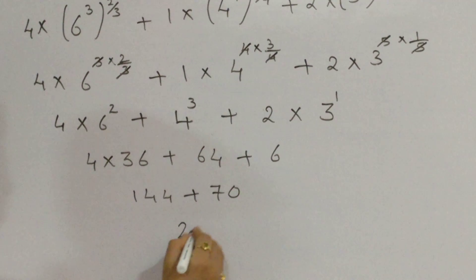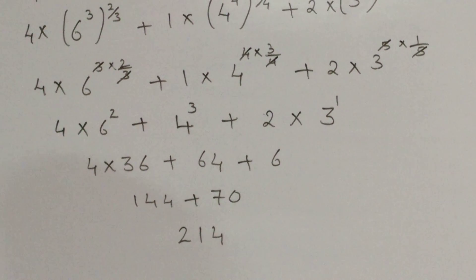When you sum up, you get answer as 2, 1, 4. You get answer as 2, 1, 4.